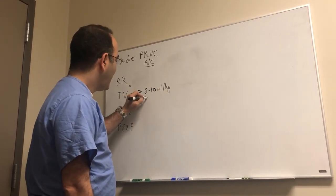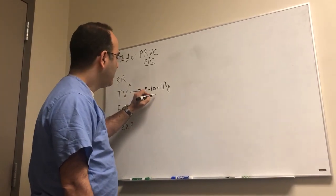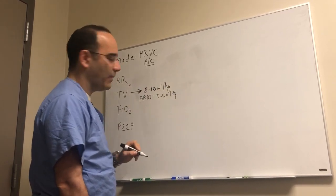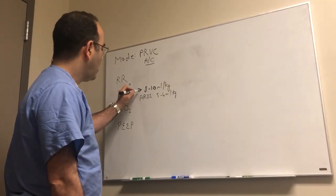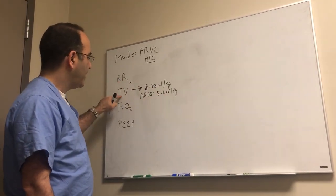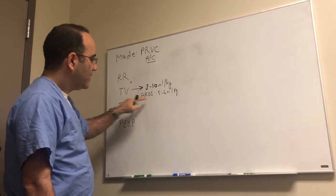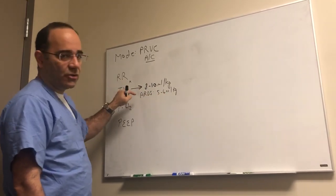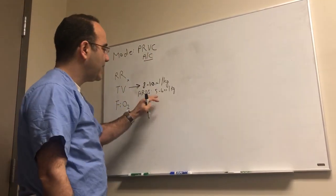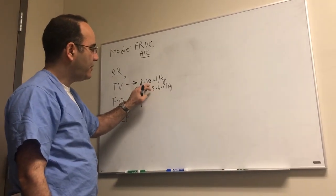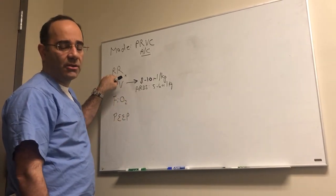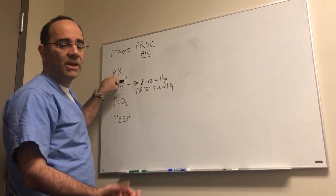If a person does have ARDS however, you need to dial that back and it would be more in the order of 5 to 6 cc's per kilo of air, again ideal body weight. Now you'll recall as the amount of tidal volume drops, minute ventilation drops because minute ventilation is respiratory rate times tidal volume. So as tidal volume drops, minute ventilation drops. As minute ventilation drops, PCO2 goes up and pH goes down. So you might have to offset this decrease in tidal volume with an increase in the respiratory rate to try to maintain the same pH. Otherwise you'll get a progressively severe respiratory acidosis.